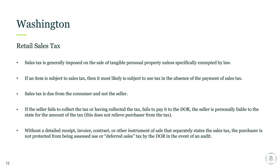In addition to the B&O tax, Washington does have a retail sales tax. Washington has been at the forefront of taxing digital products and services, applying to both the seller and potentially the consumer. It's important for Washington businesses to be mindful that as they're purchasing digital products, they're either paying sales tax at the point of purchase to the seller, or if the seller isn't collecting that sales tax, they're self-assessing use tax on those purchases. This is a common miss we see in Department of Revenue audits.